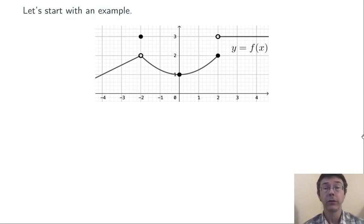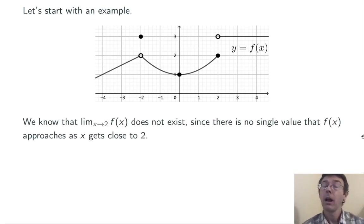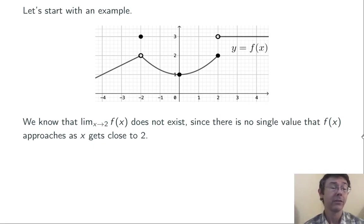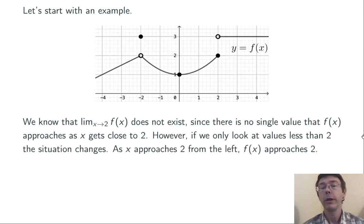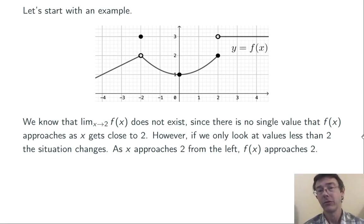Here's the graph of a function y equals f of x, and we're interested in what's going on with f near x equals 2. Now the limit as x goes to 2 of f of x does not exist. There is no single value that f of x is getting closer and closer to as x gets closer and closer to 2. There are kind of two different values, 2 and 3, so the limit doesn't exist. But if we restrict our attention and only look at values of x less than 2, the situation changes.